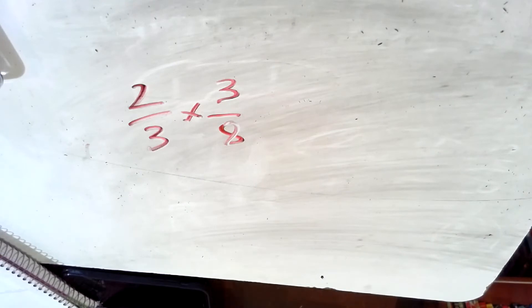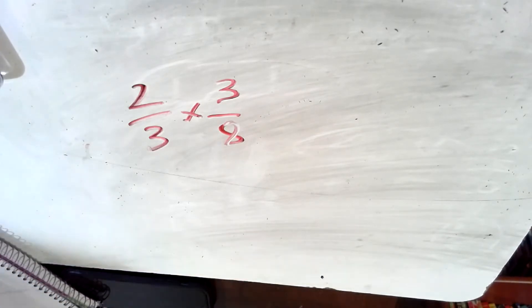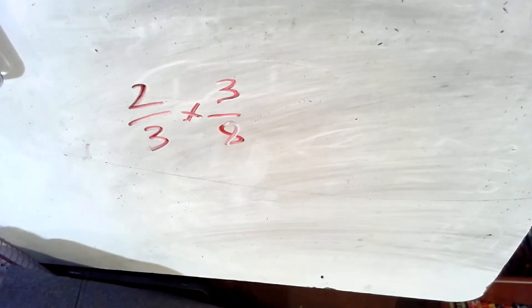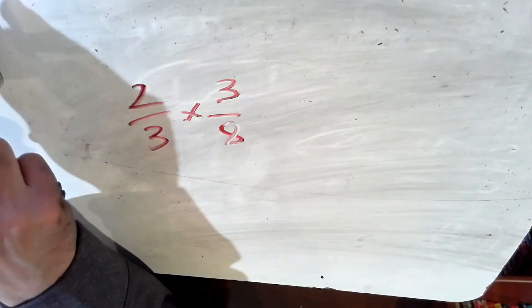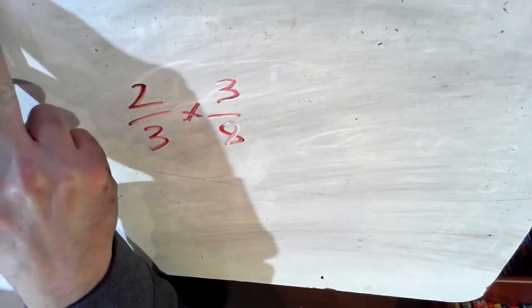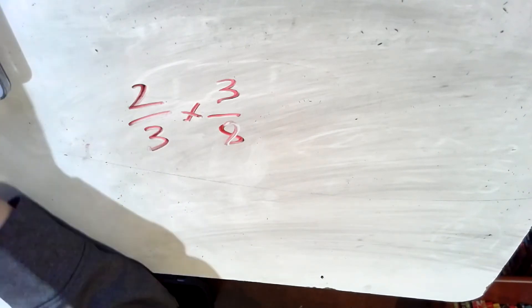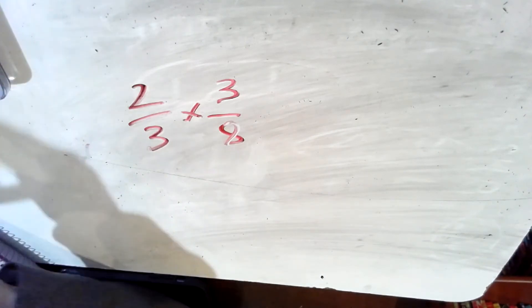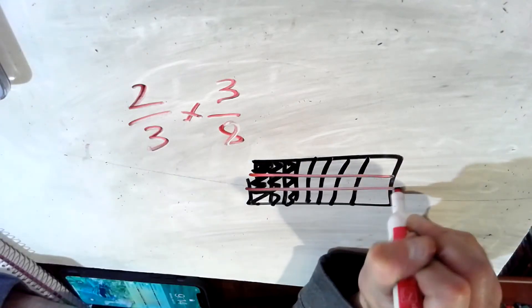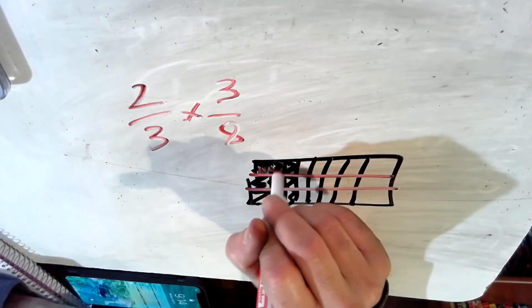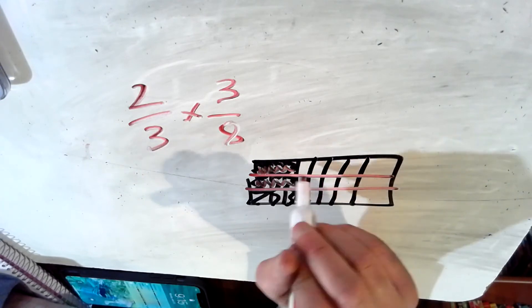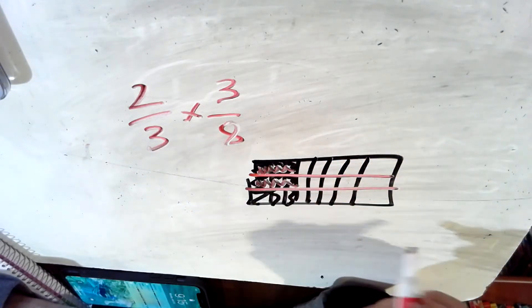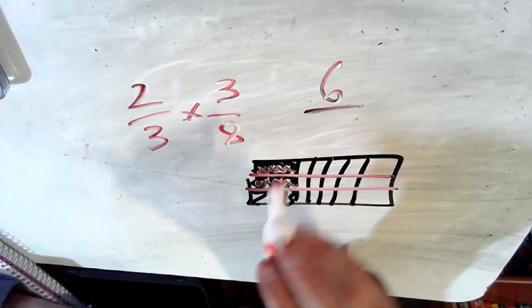Now I want you to try two thirds of three eighths. I want you to try this. Obviously, you could do this just by multiplying across. But I would also like you to try this on your own by drawing a picture to help you figure out what two thirds of three eighths would equal, knowing that it's going to be less than three eighths because you're finding part of three eighths. So here we have three out of eight. And you divide that into thirds, one third, two thirds, three thirds. Let's shade in one third, two thirds.